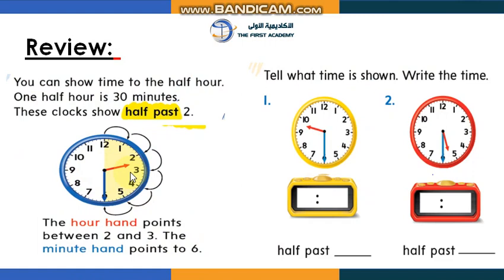Keep in mind — the short hand is coming from two o'clock and has not reached three o'clock yet. So in this case I say it's 2:30, or half past two, because when I look at the long hand I can see it stopped in the middle of the clock, halfway around.